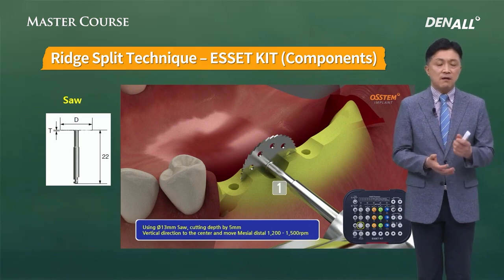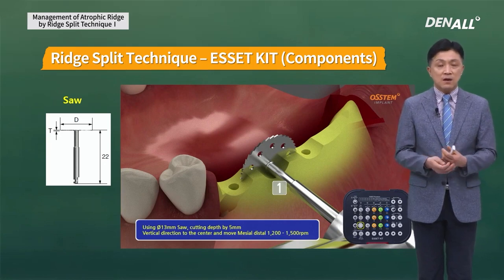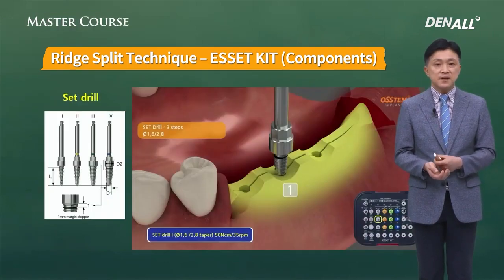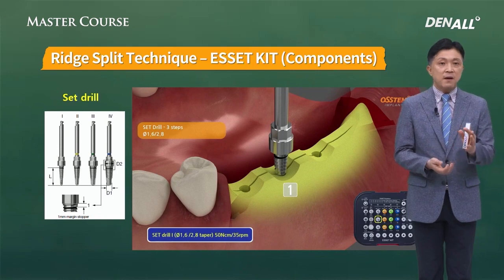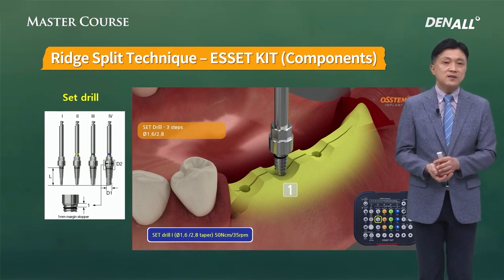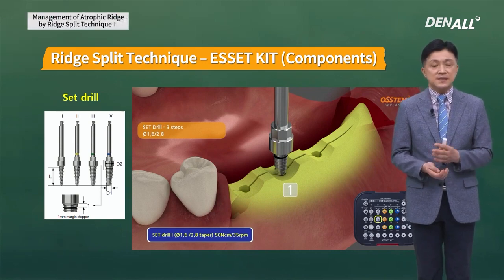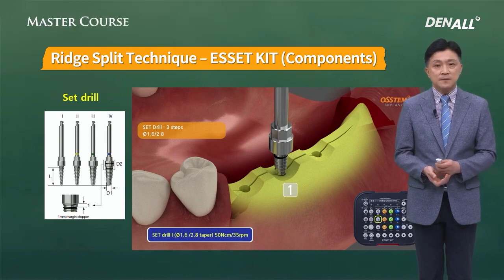In most cases you proceed without vertical osteotomy. In a distal free end case, you only form horizontal osteotomy. Next, set drills are used to split the ridge after osteotomy. There are set drills numbered 1, 2, 3, and 4. Using the asset kit, you can place 4 mm or 4.5 mm implants using these four set drills.